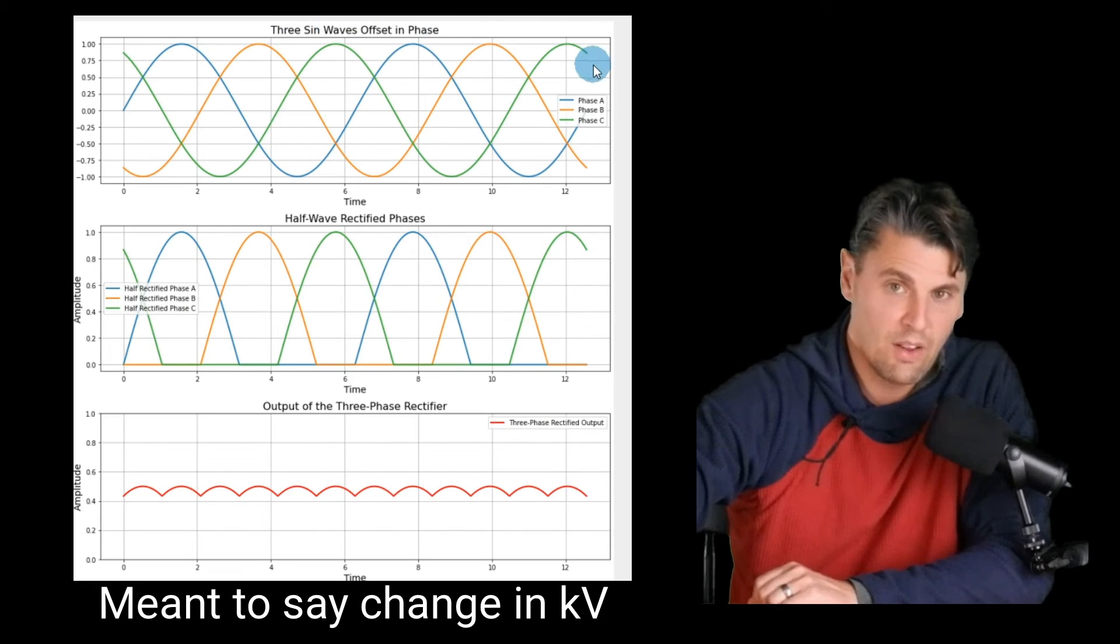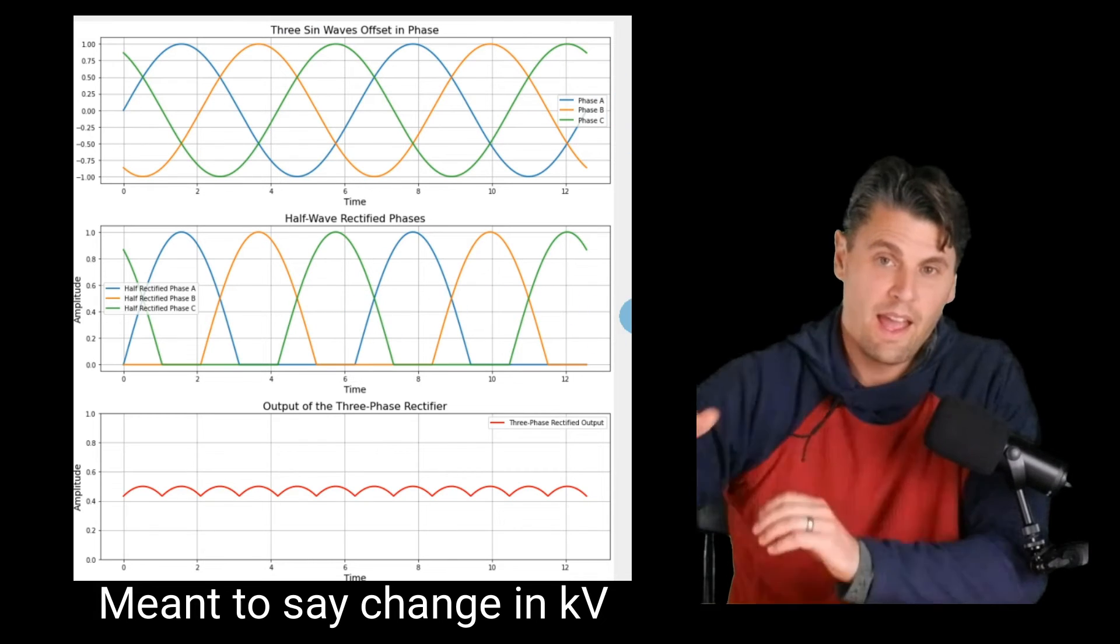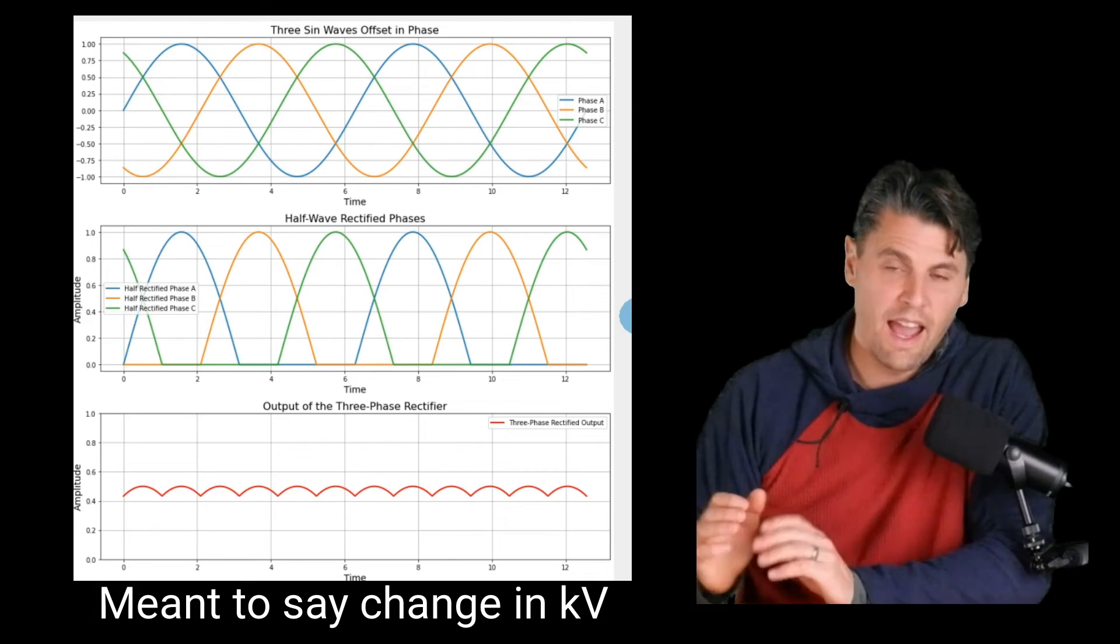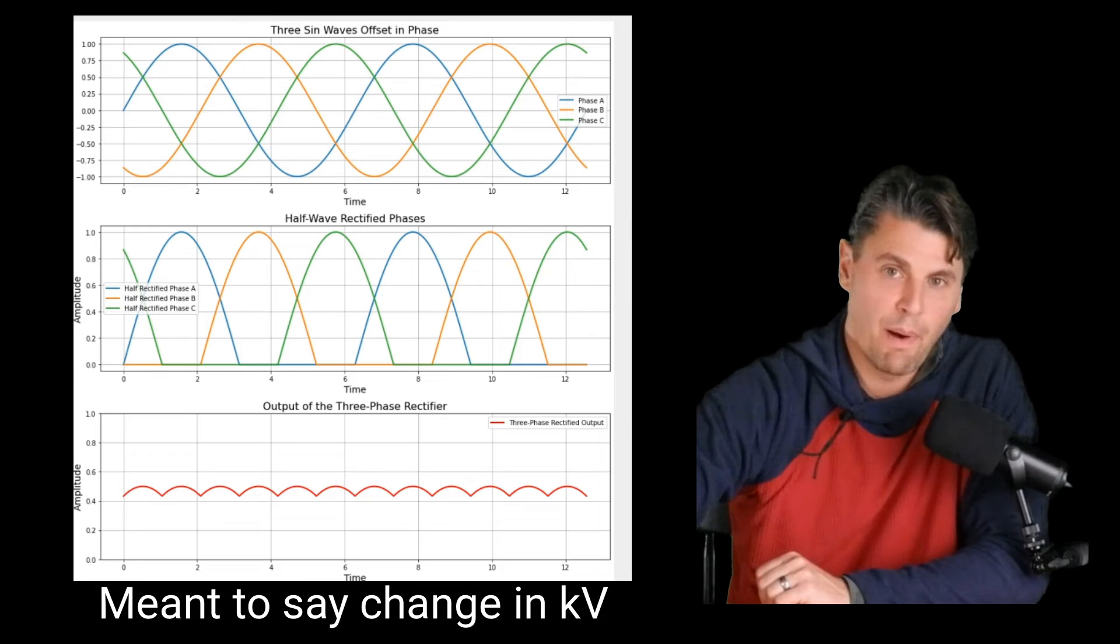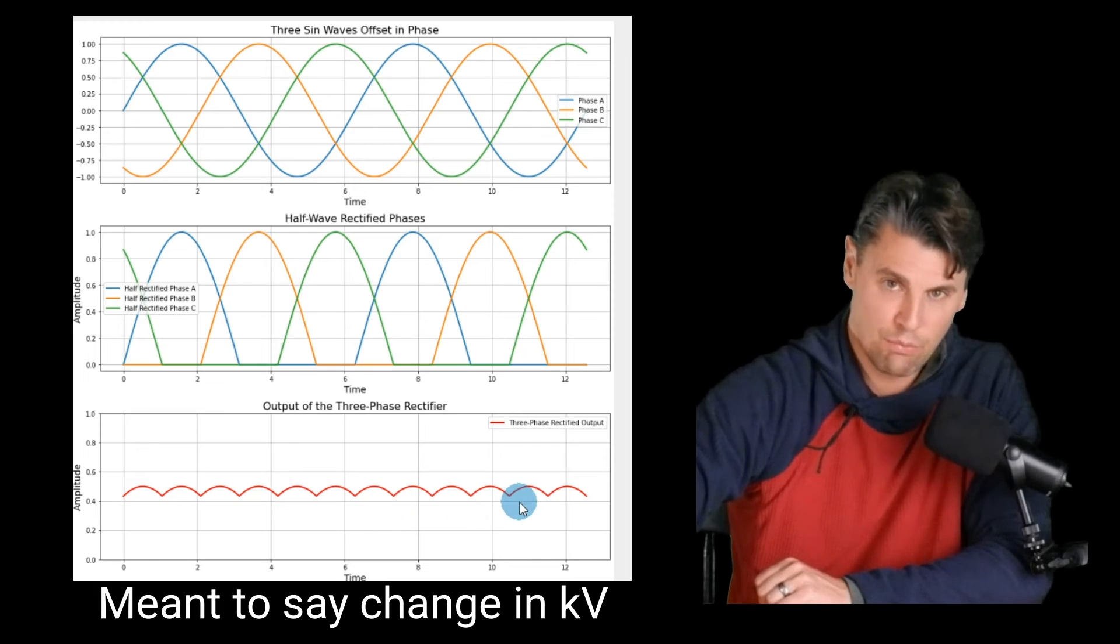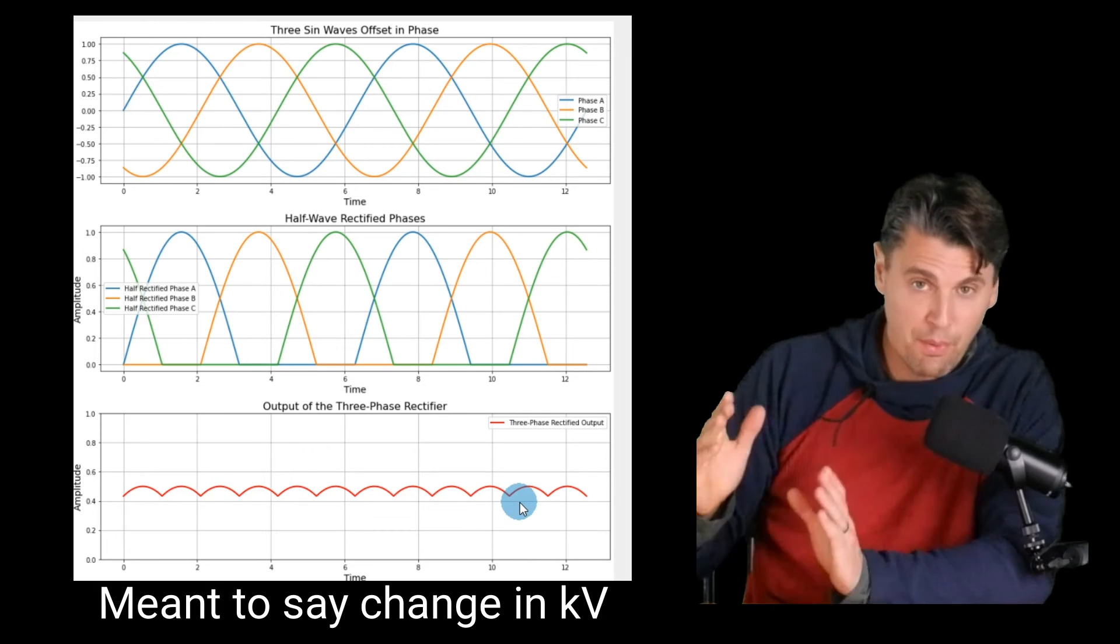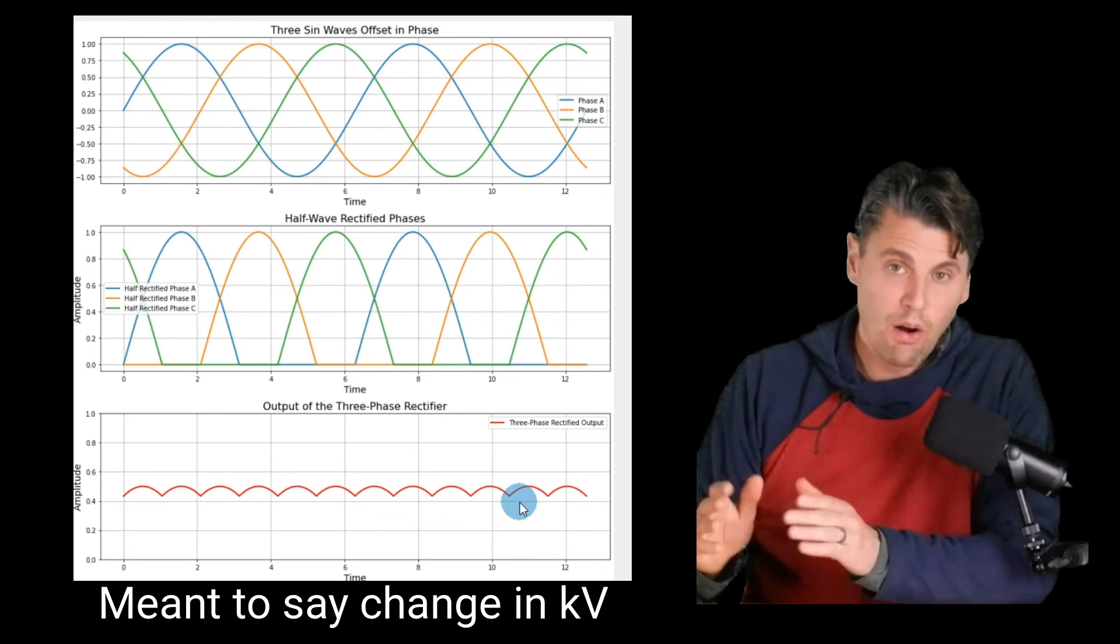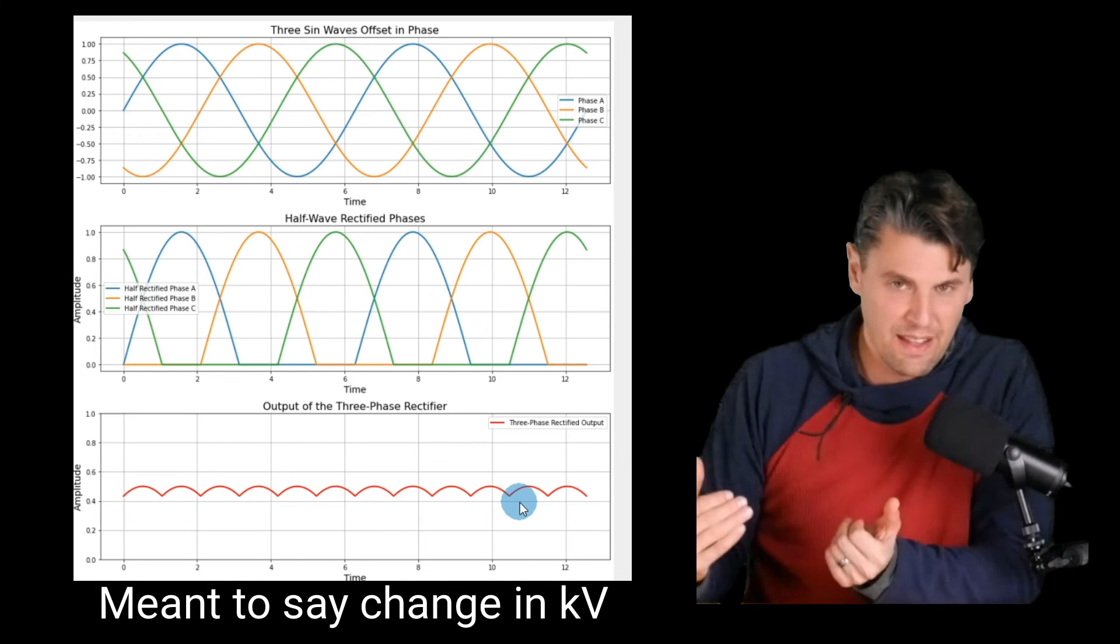Take that signal in and then we put it through half wave rectifiers. And then we actually combine those together, we can get a signal that looks like this. So if you see this signal now, coming out of what we call the three phase input, now there's significantly less ripple, and you can still see a little bit of ripple or change in the KVP over time, but it's significantly reduced.